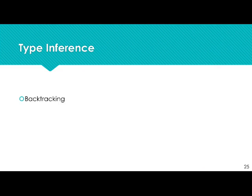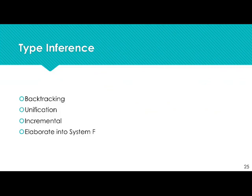Our main points of interest in the inference algorithm are: we use backtracking to not lose expressivity, we use unification, we work incrementally by propagating residuals upwards rather than solving constraints immediately, and we elaborate our program into System F since it's the most commonly used intermediary language for functional programming. We're going to show the signatures and a small example rather than the full rules.